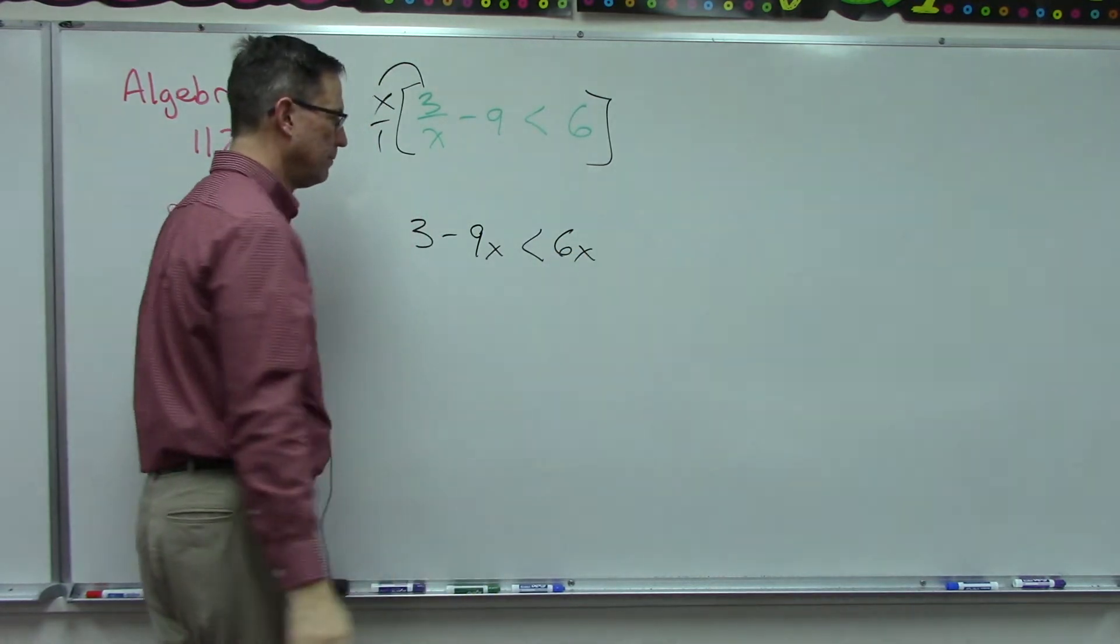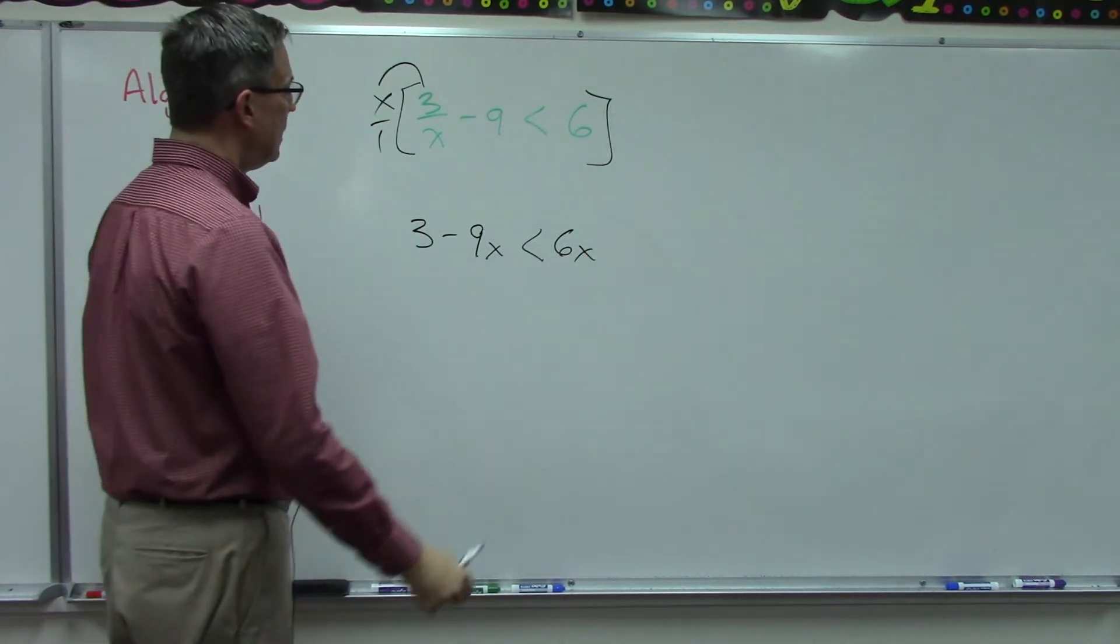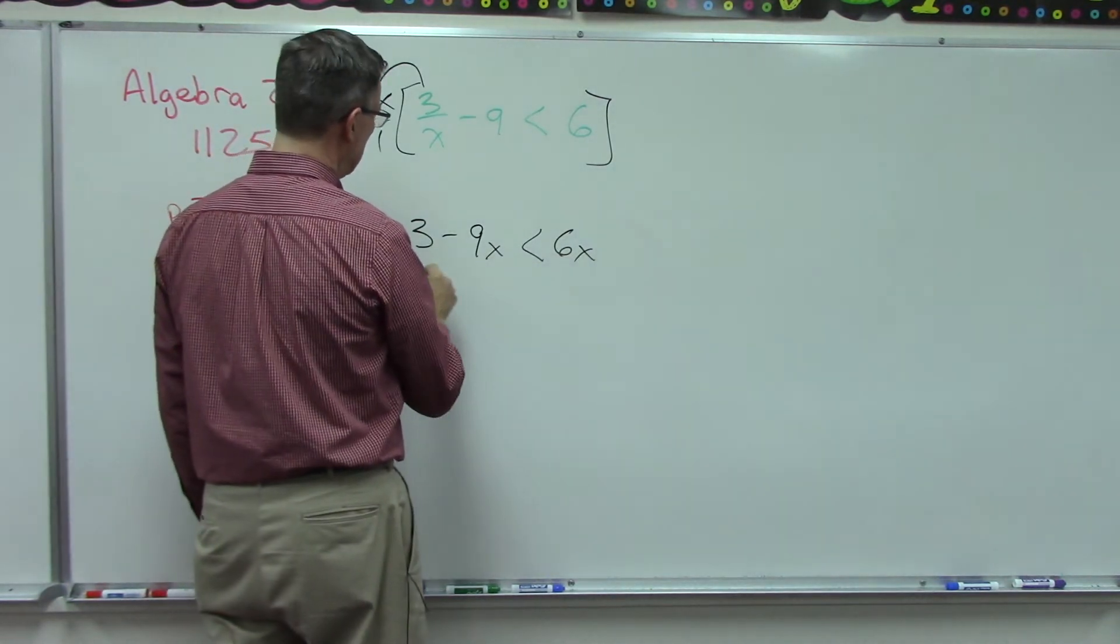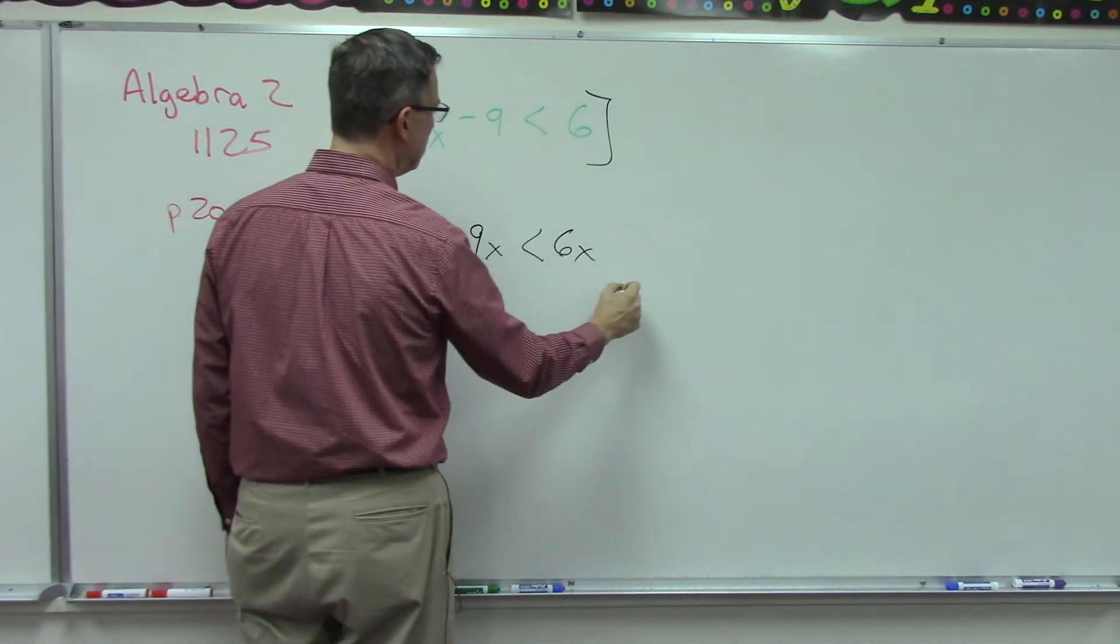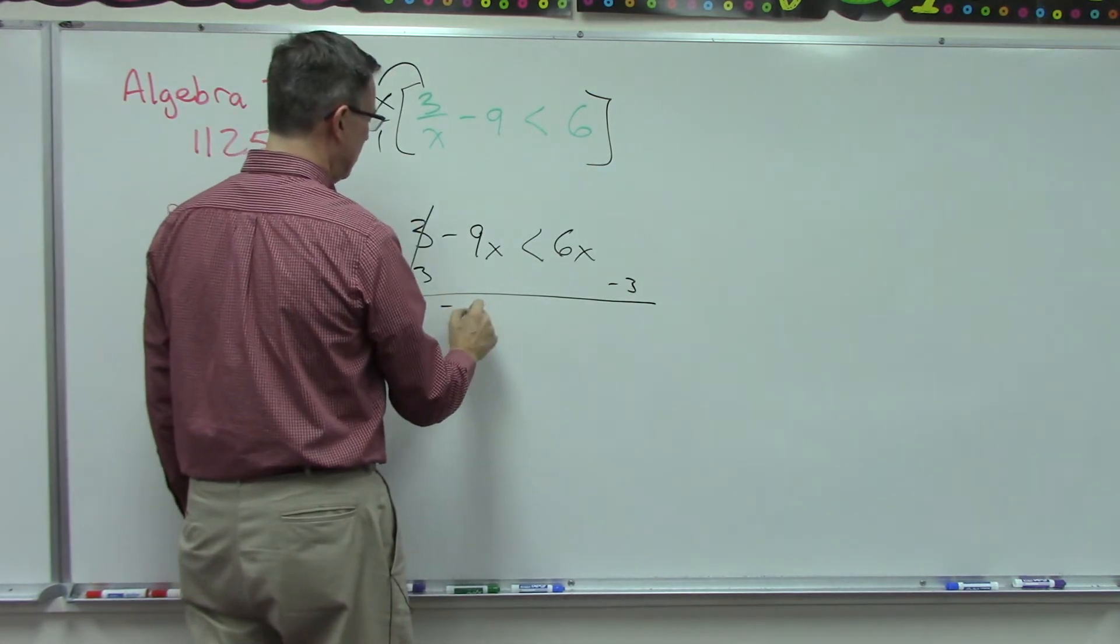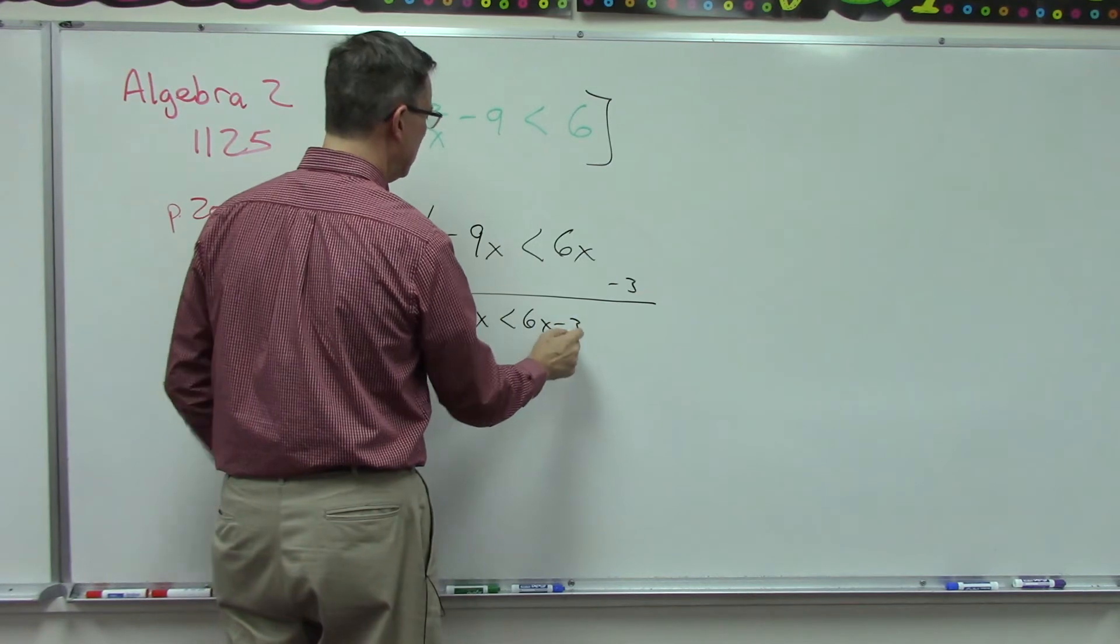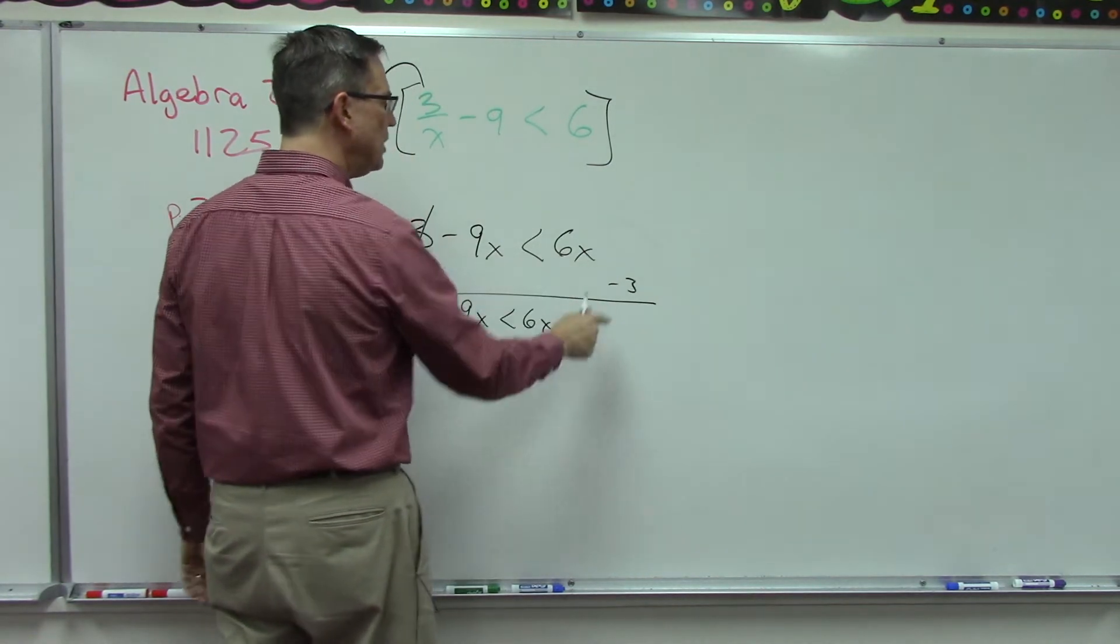All right, we want to keep the X on the left, so let's subtract three from both sides. So I have negative nine X is less than six X minus three. I can't combine these right, because they're not like terms.